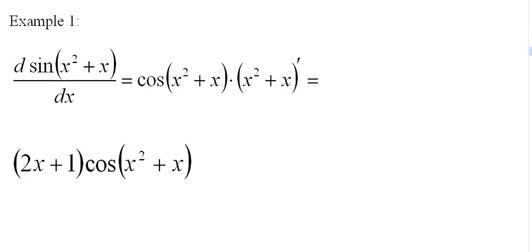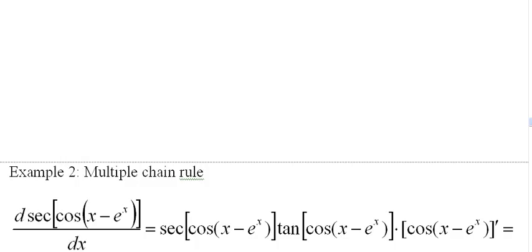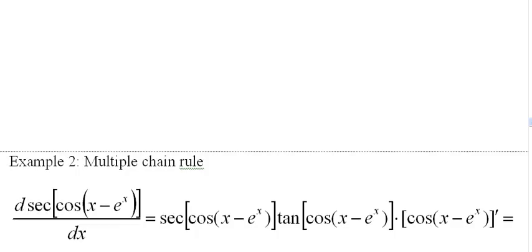This next example is a little more complicated. Multiple chain rule. Here we have f of g of h of x. So in other words we have a function inside a function inside a function.